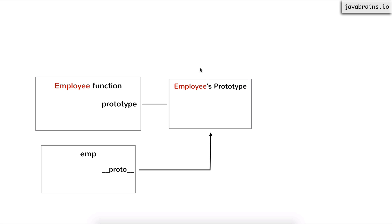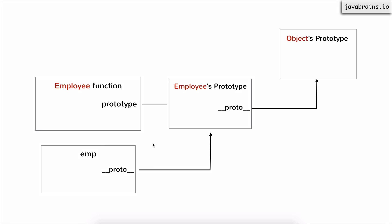So when you have something on your prototype — take this picture — you have an employee function, you have employee instances created by calling new employee, and you have the employee's prototype. So you can have this kind of multi-level inheritance. But this is not exactly what we want. Let me give you a scenario where I'm going to use inheritance, and we'll see how to do this in JavaScript.